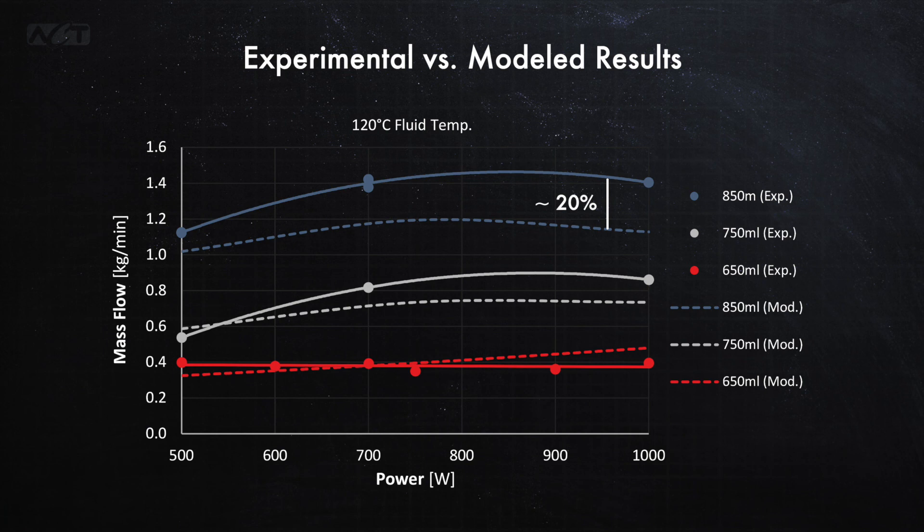While 20 percent is significant, it's well within the typical predicted ability of the two-phase frictional pressure drop correlations that we use. And importantly, the model was shown to be capable of predicting the trend of increasing mass flow rate with increasing charge. This initial work demonstrated that the model is capable of predicting the mass flow rate for a two-phase loop thermosyphon.